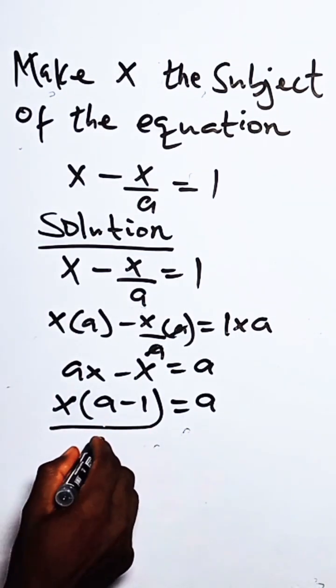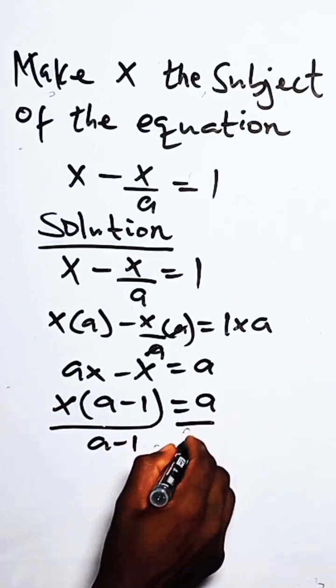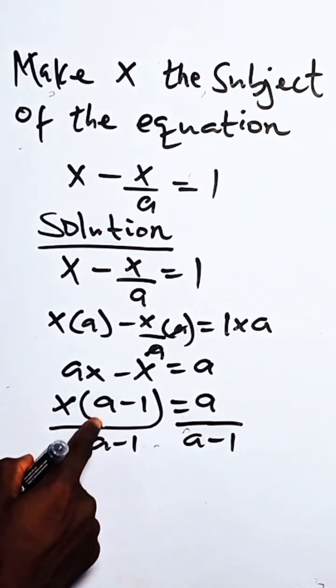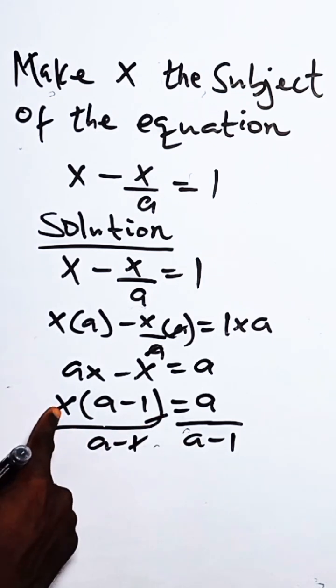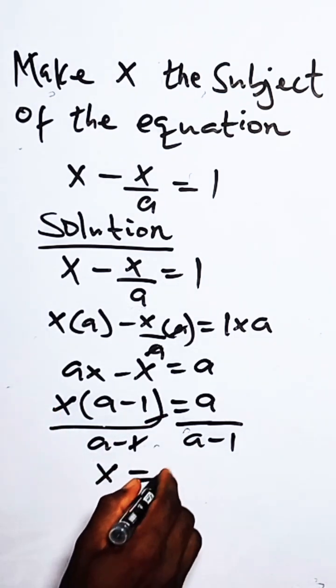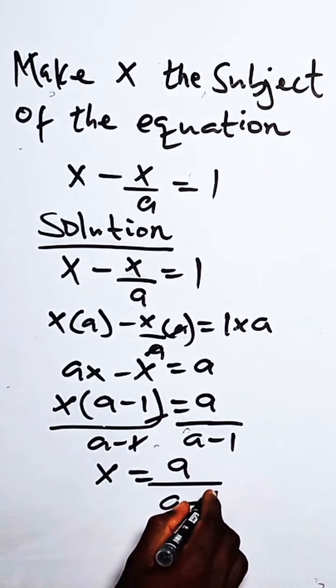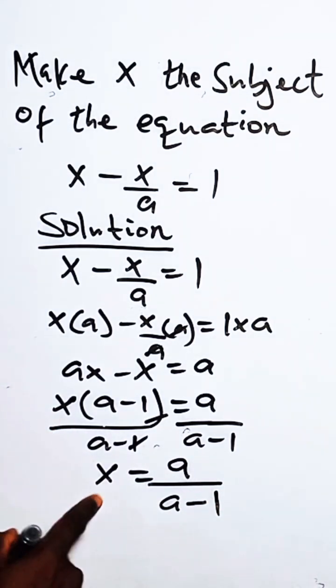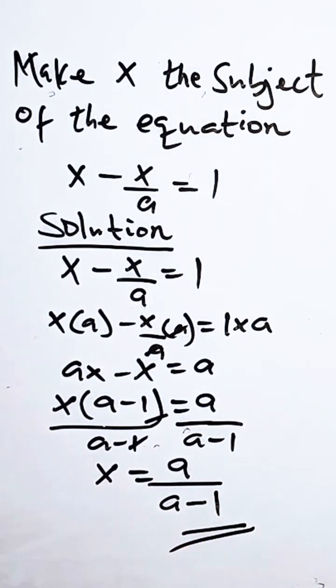to divide both sides of the equation by a minus one. Why are we doing that? To eliminate this. So this is out, so we have just x equals a over a minus one. So by so doing, we have made x the subject of the equation. Thank you very much.